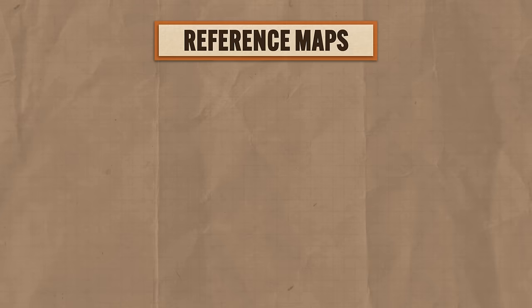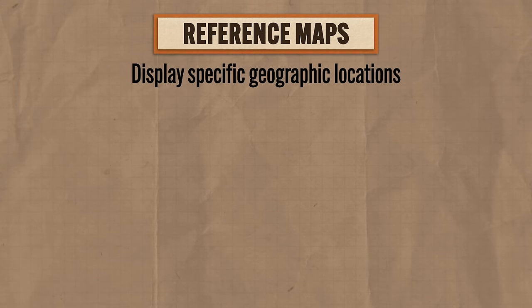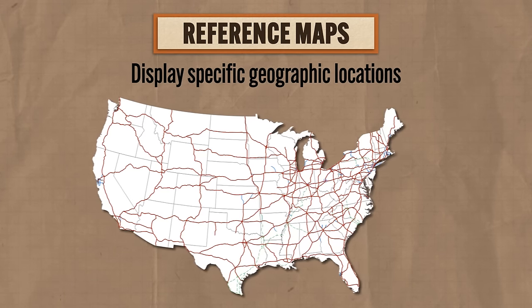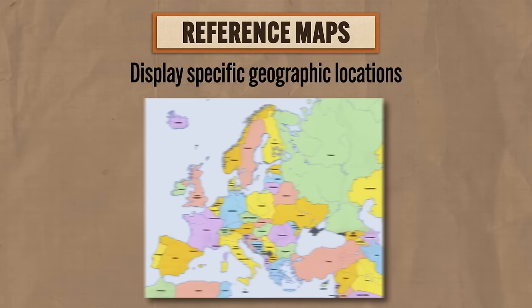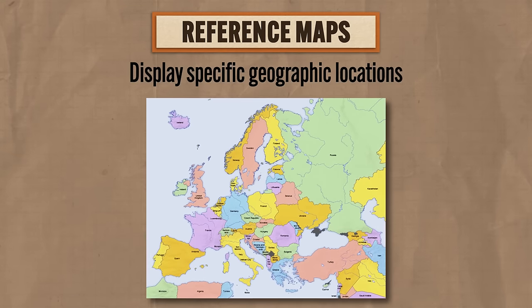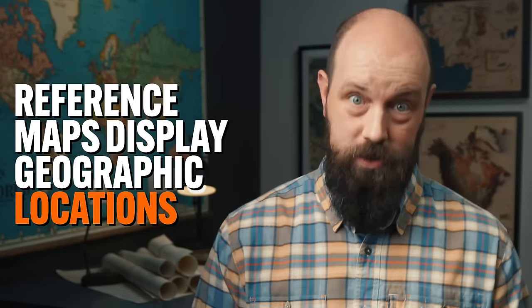Anyway, back to the two kinds of maps you need to know. First, you need to know about reference maps, which display specific geographic locations. For example, here's a road map, which shows the location of roads or highways. Or here's a political map, which doesn't show roads, but instead shows the boundaries of states and countries. For most of you, when you think about maps you've seen in your life, you're thinking about reference maps. The most important thing to remember is that reference maps display geographic locations.